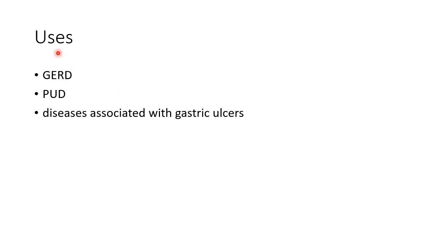Now let us see about the uses of H2 receptor blockers. H2 receptor blockers are used in the treatment of gastroesophageal reflux disease, peptic ulcer disease, and other diseases associated with gastric ulcers.